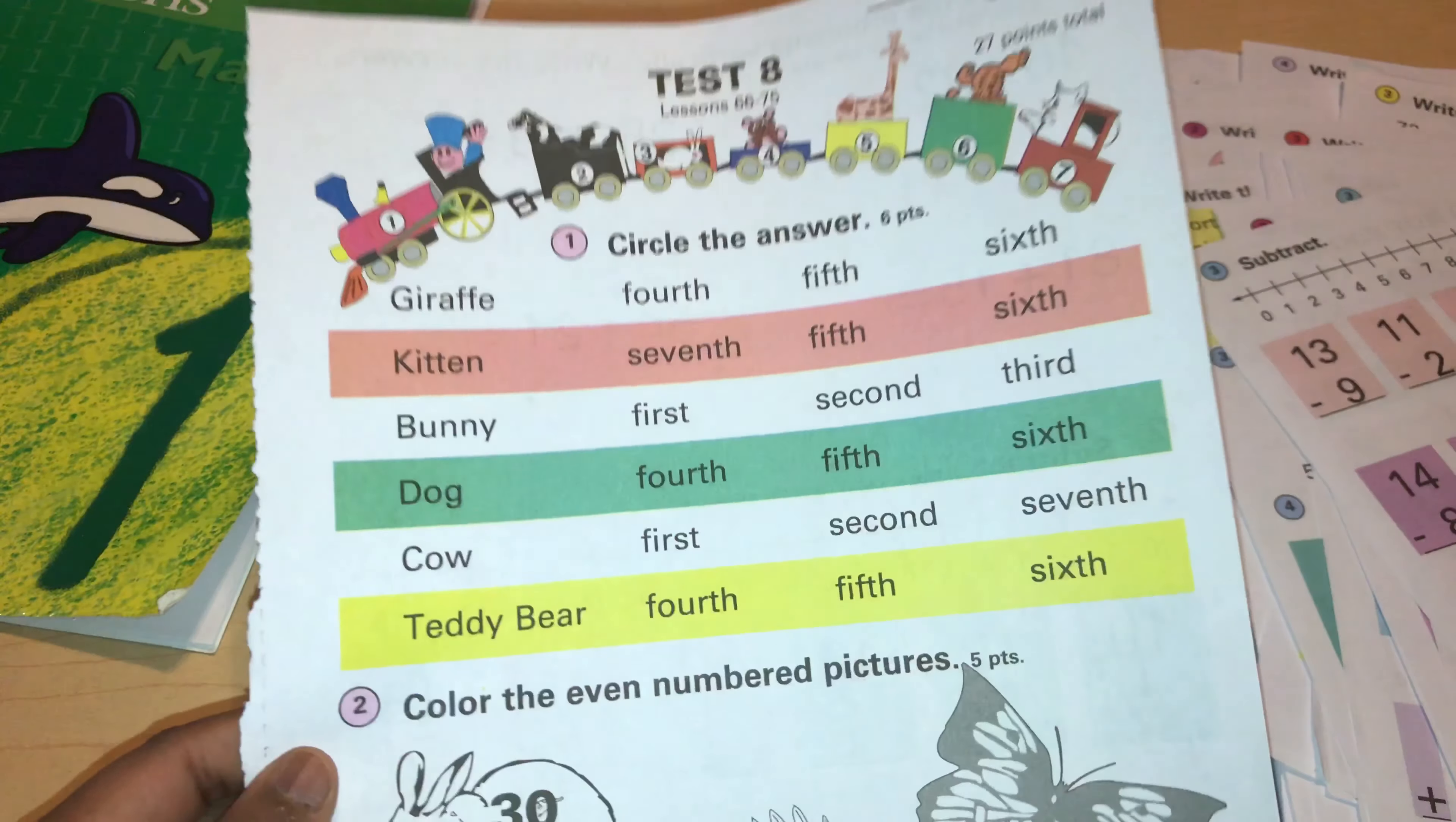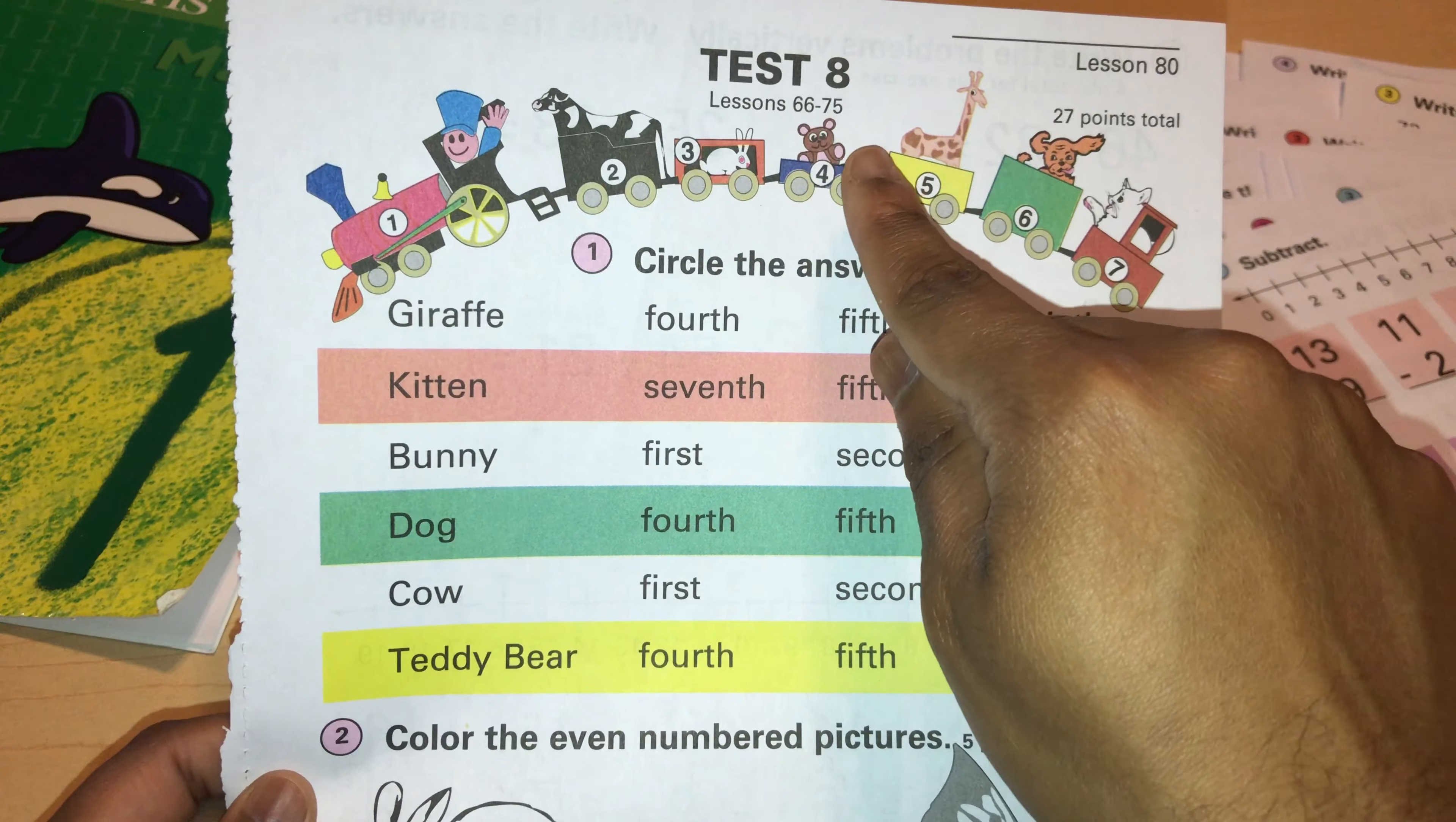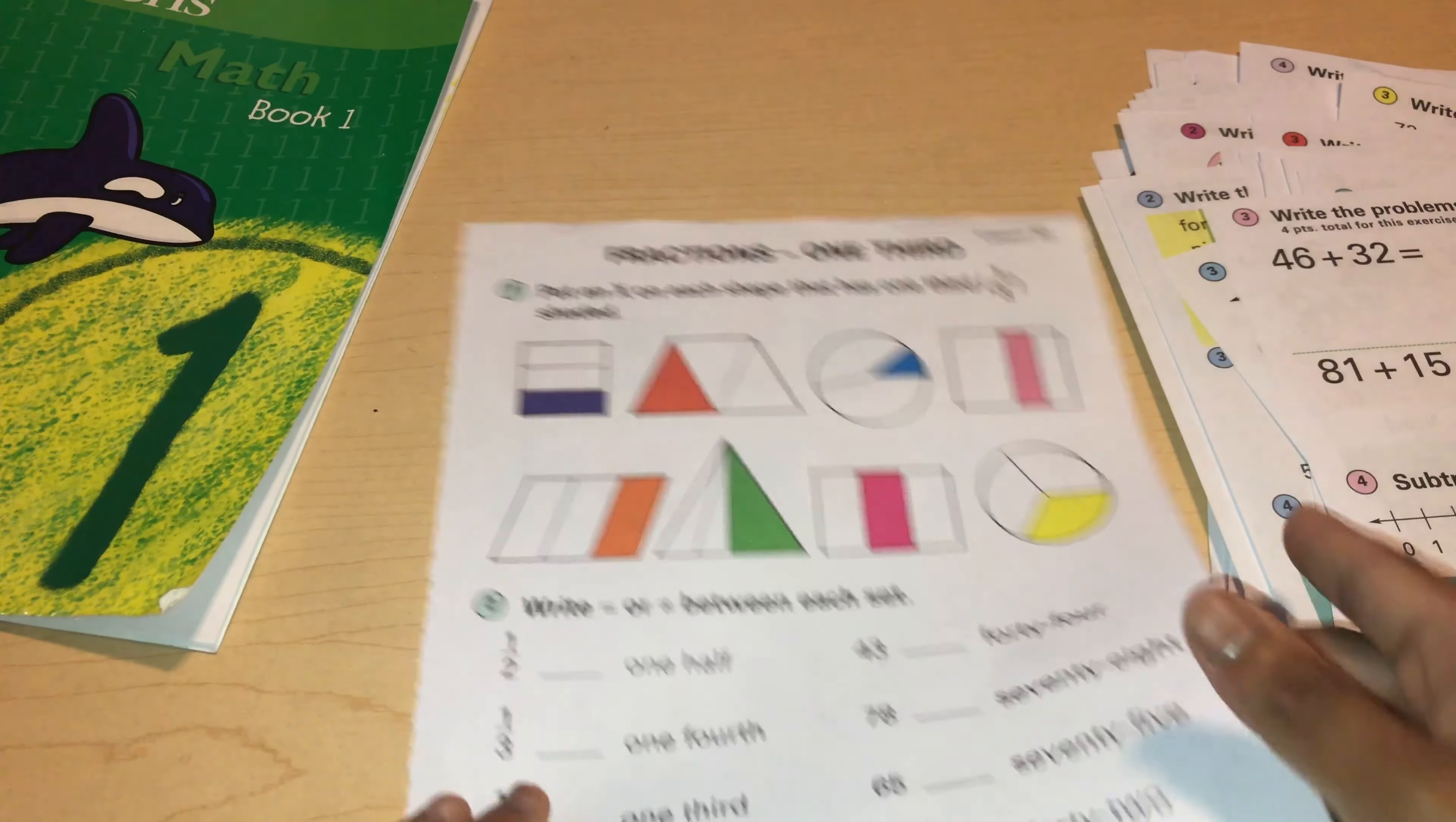Here they do have tests. I did forget to say they do have tests. So this is test eight, lesson 66 to 75. The child will be doing pretty much a test of what they've been learning. Again, the number line, they're known for their number lines.